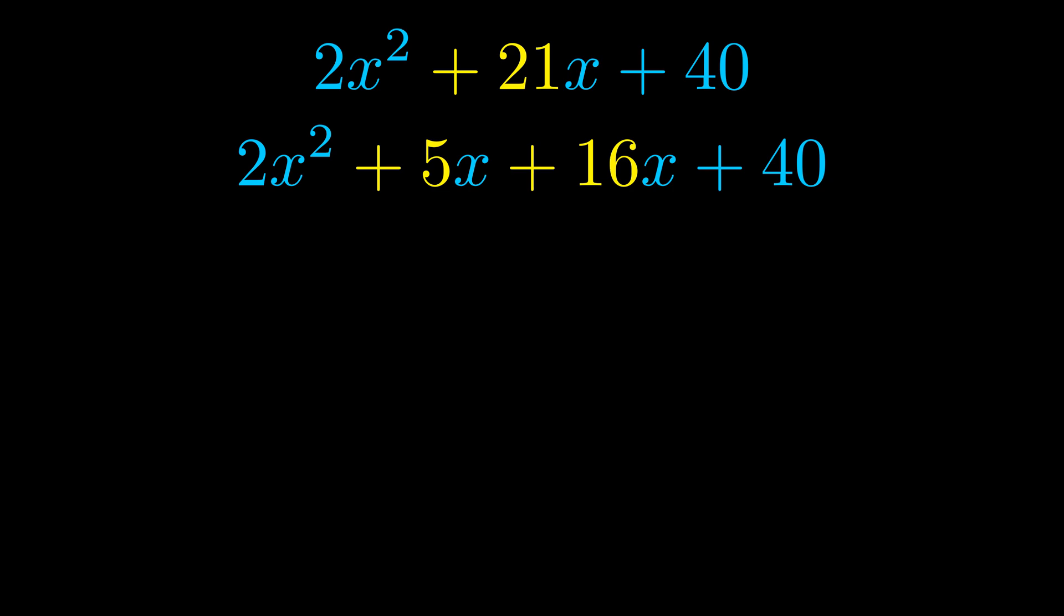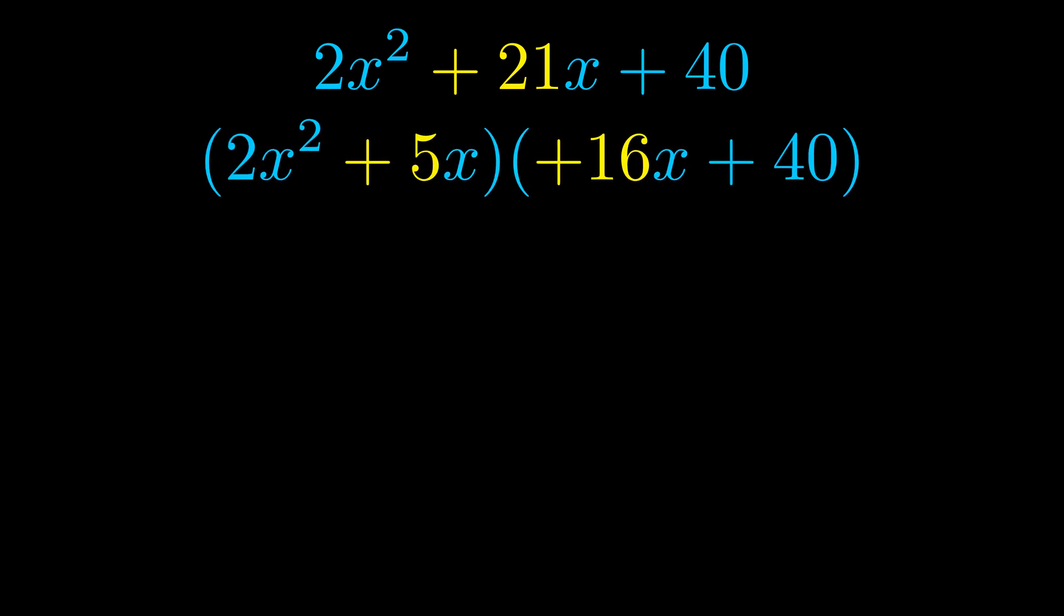Once we've done this we go ahead and we put parentheses around the first term and the last term. And we do that so that we can take the greatest common factor out of both terms. We can see the greatest common factor is now outside in green. Notice also how what remains inside of the parentheses is the same in both cases. The blue values are the same.